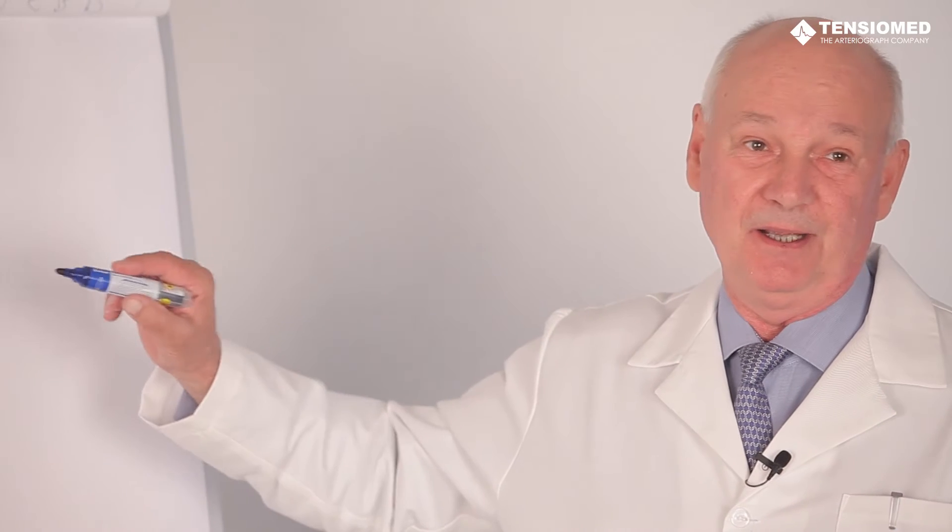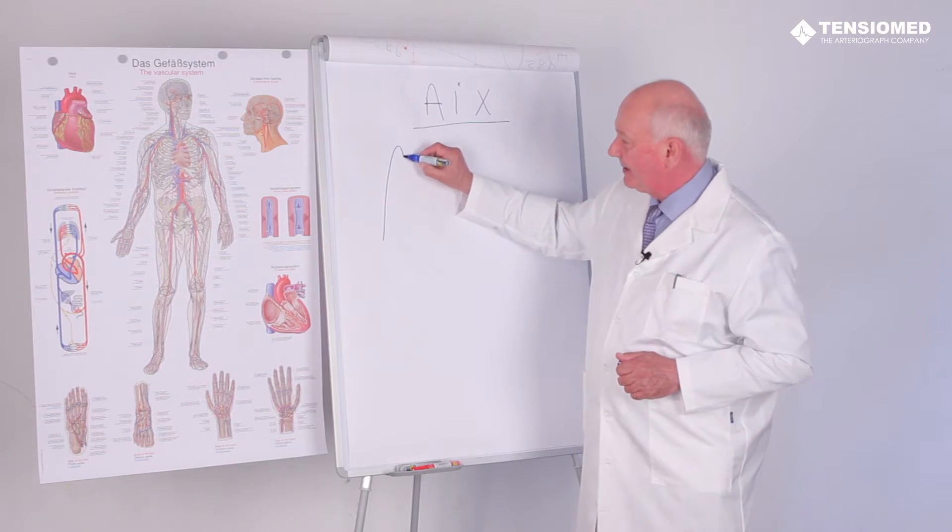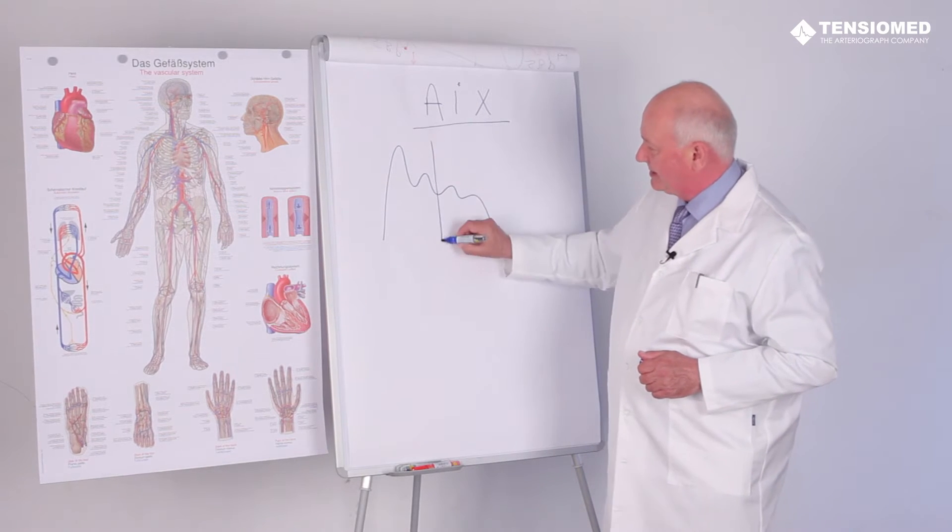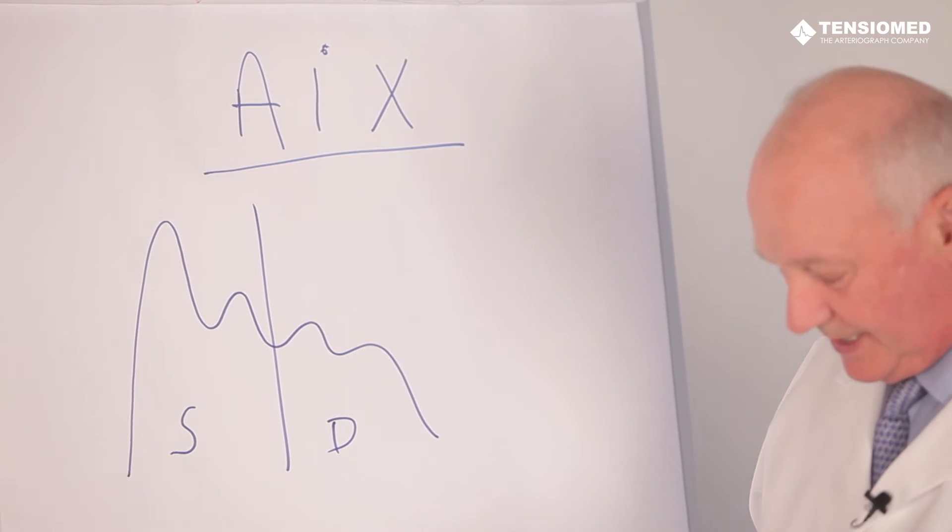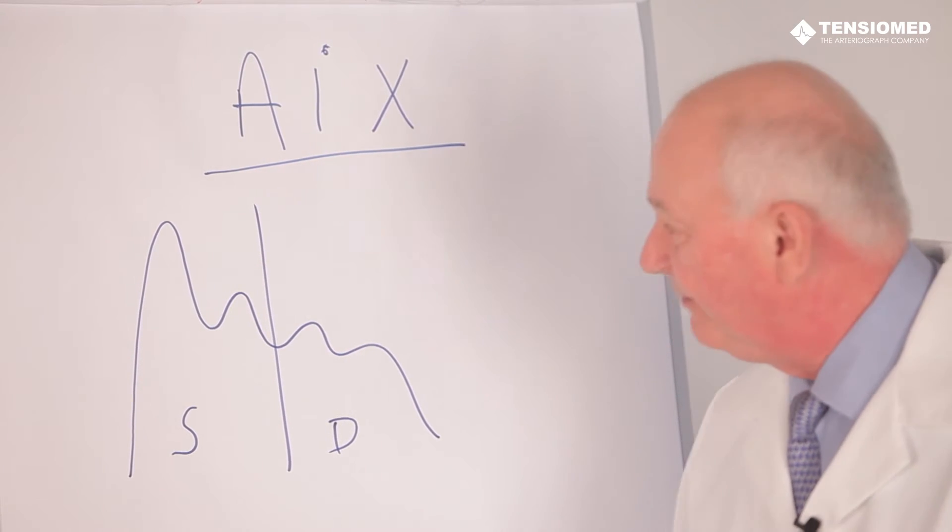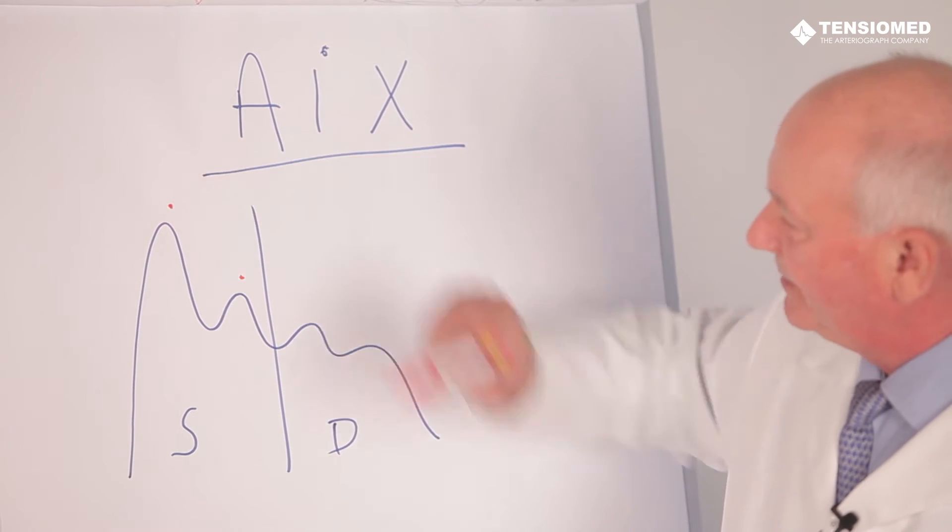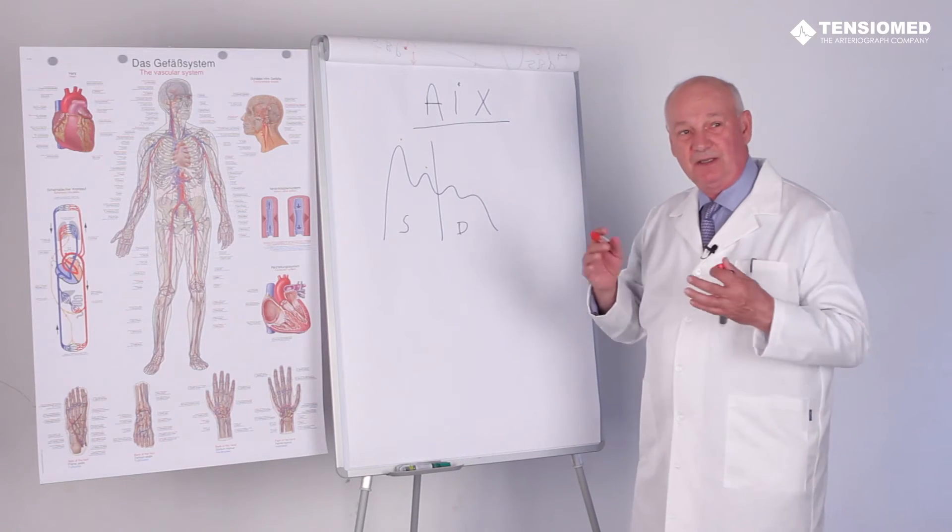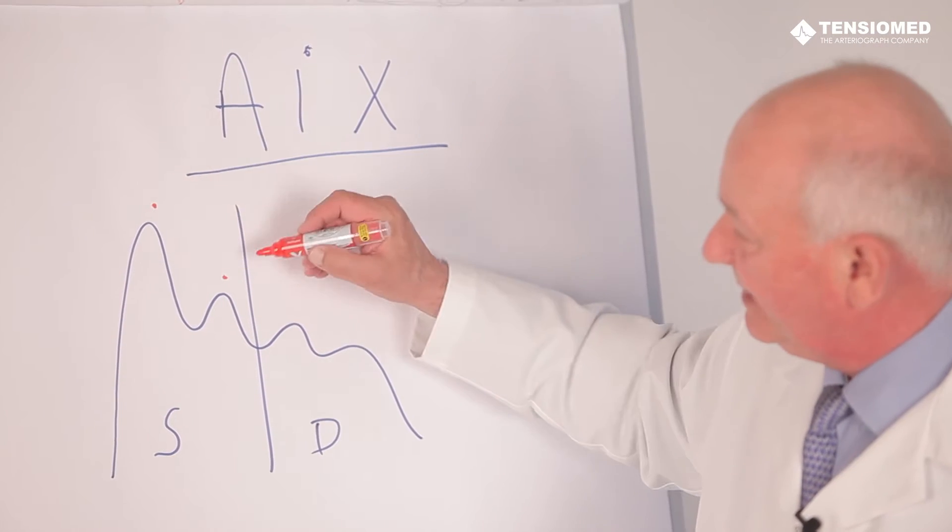What is basically the augmentation index? If we take an arterial pulse pressure, this is systole, this is diastole. Here we can see that there is a very nice distinguished two signals and waves. This is first the direct wave which is ejected by the left ventricle work, and then the second wave is its reflection.